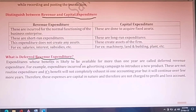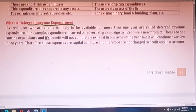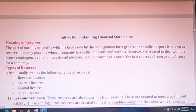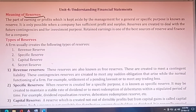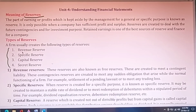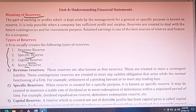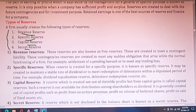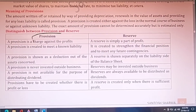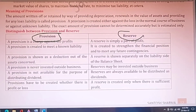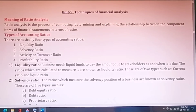Unit 4 is on understanding financial statements. You should do the definition of reserve and the different types of reserves: revenue reserve, specific reserve, capital reserve, and secret reserve. Also study the difference between provision and reserve — this distinction question can come for 10 marks.